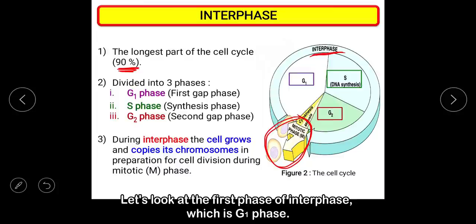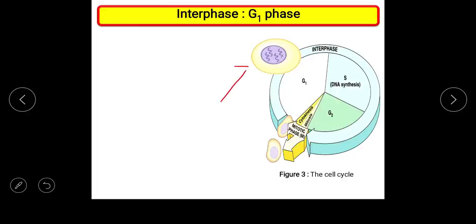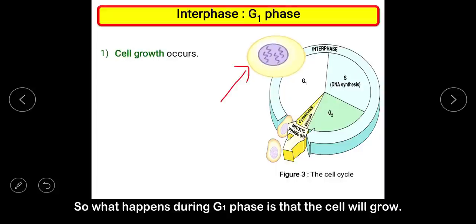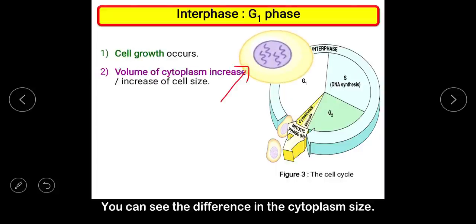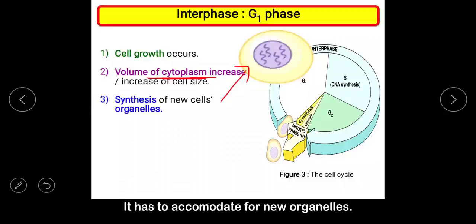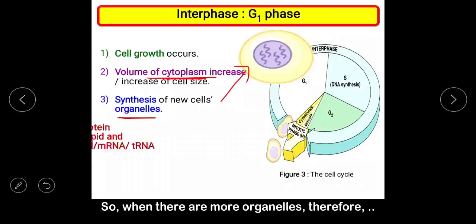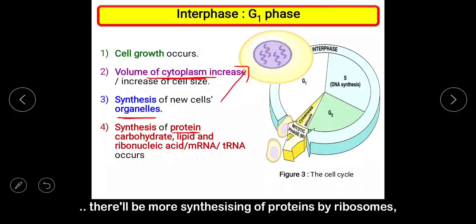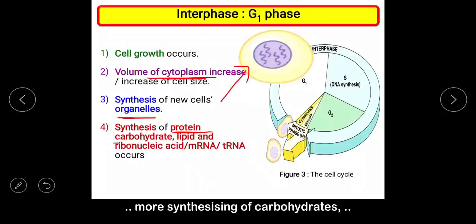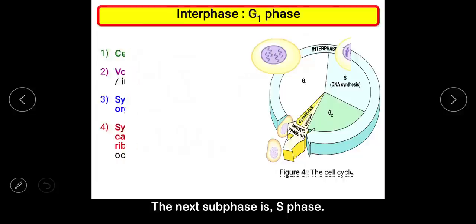During G1 phase, the cell will grow — you can see the difference in cytoplasm size. The cell grows to accommodate new organelles, because during G1 phase, new organelles are being synthesized. When there are more organelles, there will be more synthesizing of protein by ribosomes, more synthesizing of carbohydrates, lipids, and ribonucleic acids such as mRNA and tRNA.